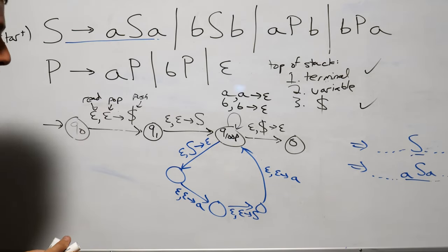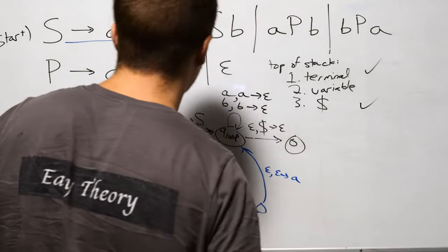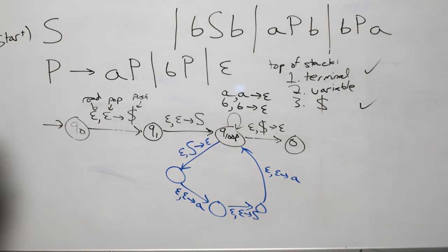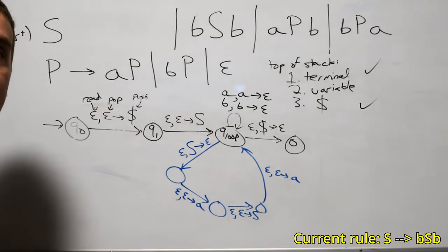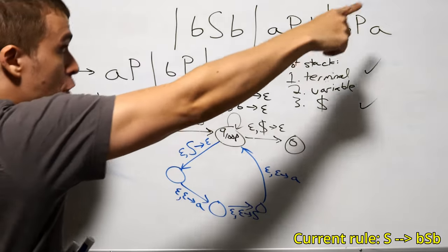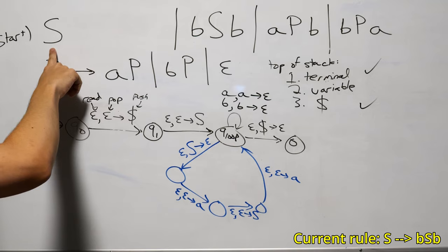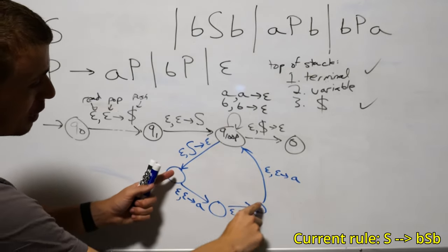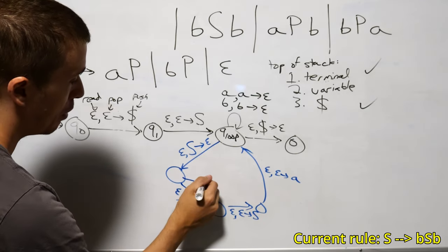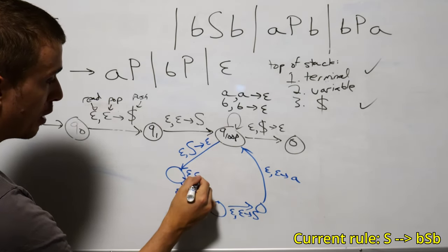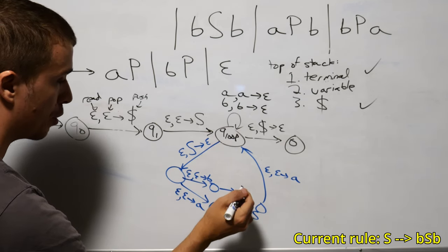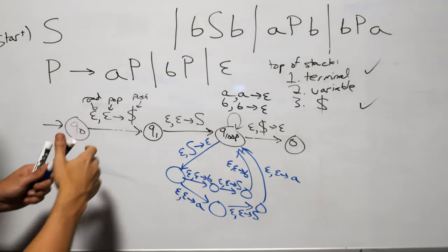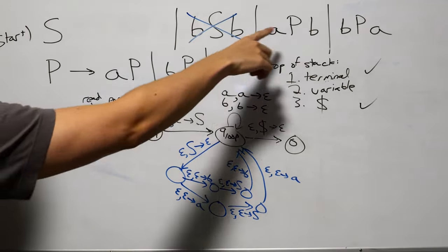Now we have to deal with all the other rules. For S goes to BSB: the technically correct thing is to make a separate set of loops for each rule, but since it's popping S off every single time, we can chain on. I'm going to make a different set of two states for the BSB rule and push on B. So that rule is done.